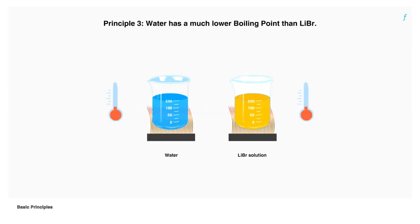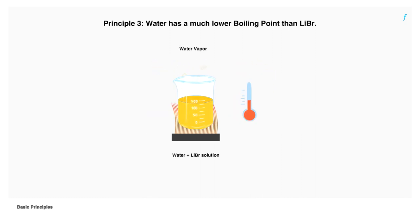When lithium bromide and water are mixed together, we can separate them by just heating the mixture up. Water boils at a much lower temperature than lithium bromide and evaporates leaving behind a concentrated solution of lithium bromide.